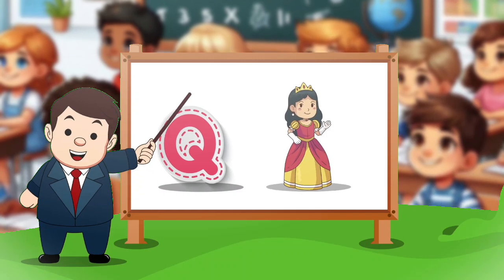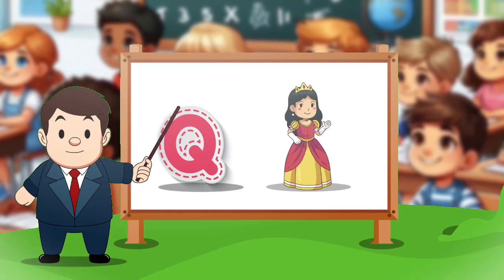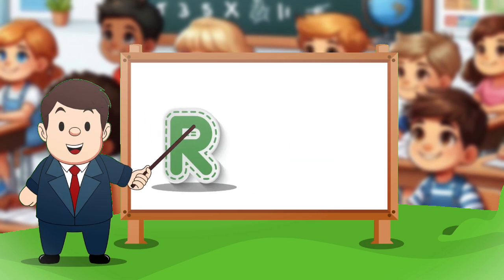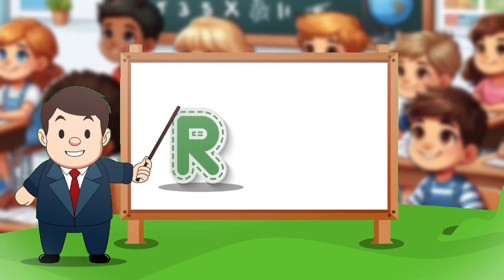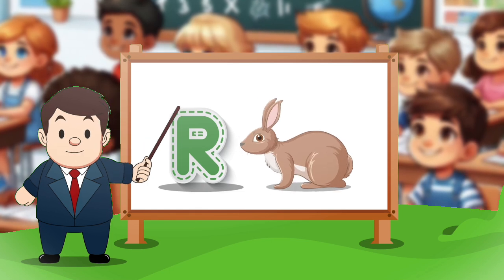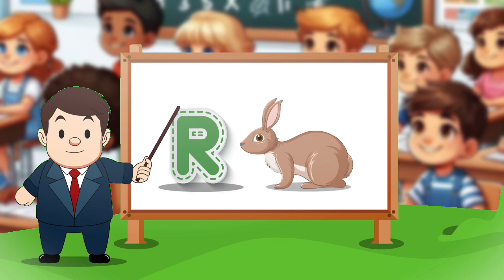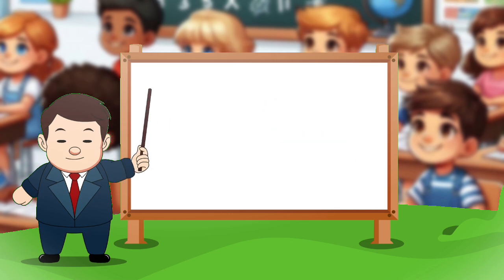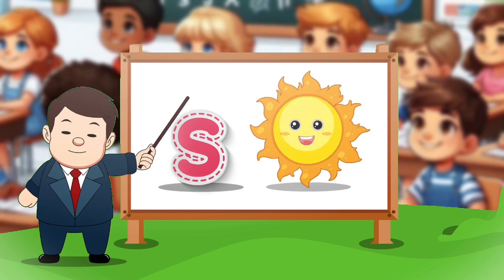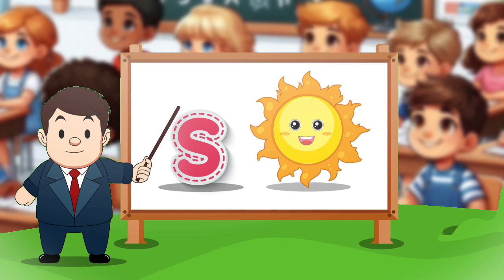Q. Q for queen. R. R for rabbit. S. S for sun.